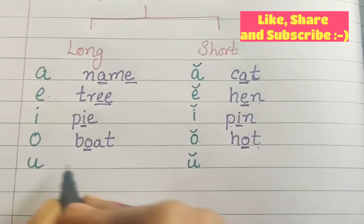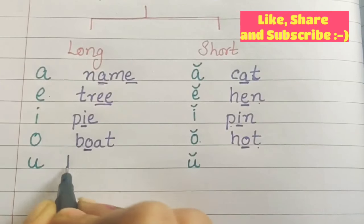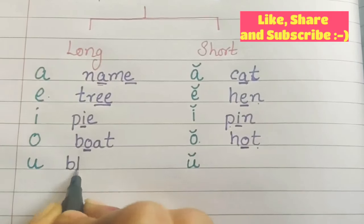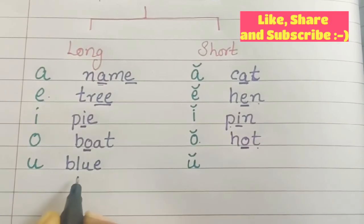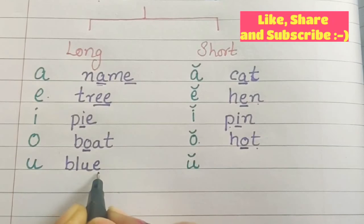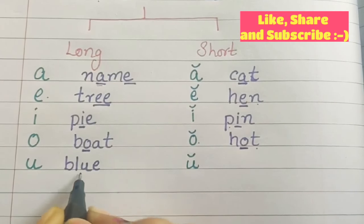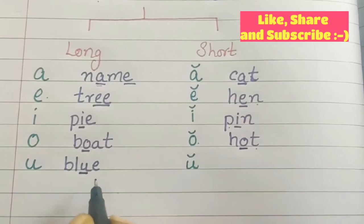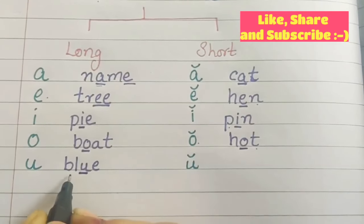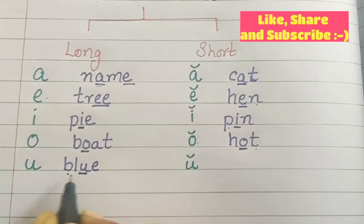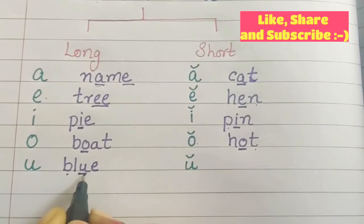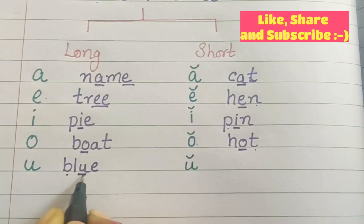Now U sound. B-L-U-E, blue. U and E are together, so the first vowel is the speaking vowel. Blue. U is getting the long sound. Blue.